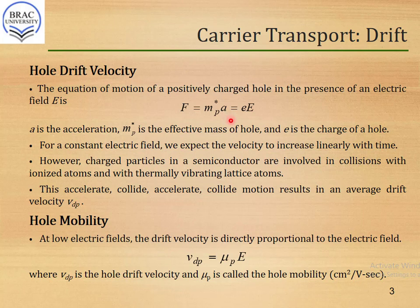Vdp is the hole drift velocity. At low electric fields, the hole drift velocity is directly proportional to the applied electric field, so Vdp is proportional to E. Specifically, Vdp equals mu_p multiplied by E, where E is the applied electric field and mu_p is the proportionality constant called hole mobility, with units of centimeter squared per volt-second.